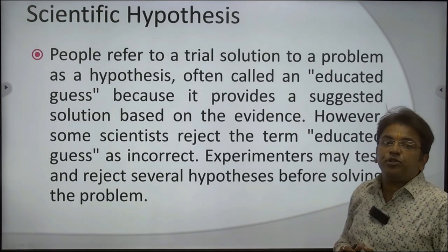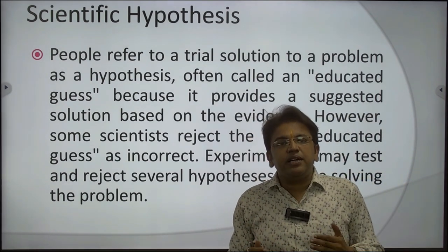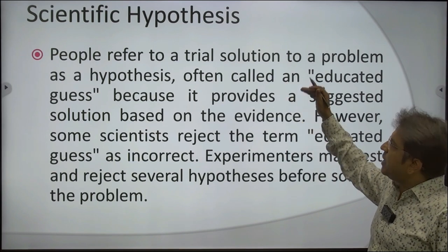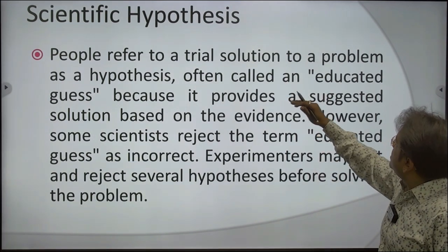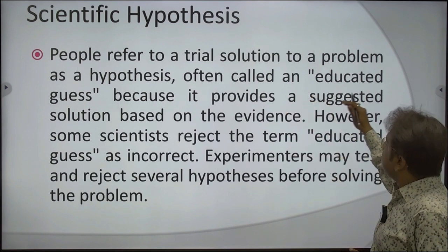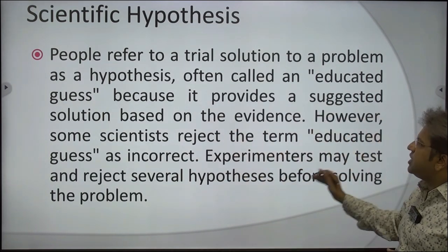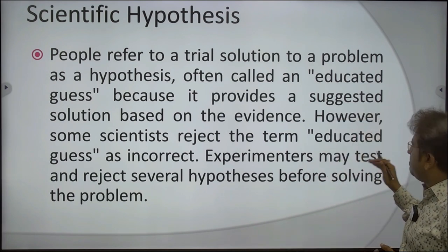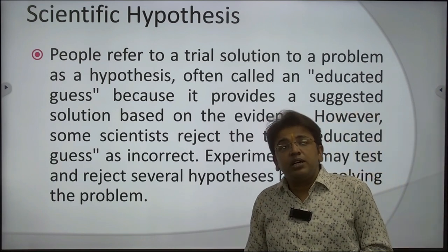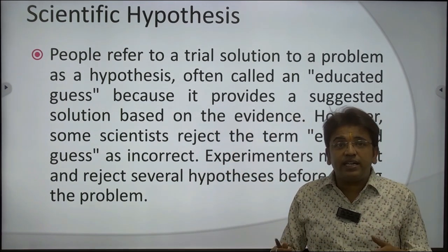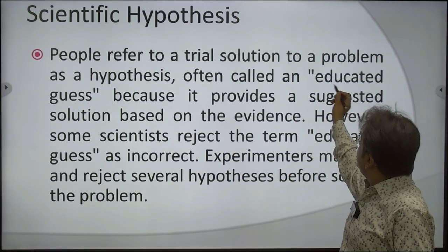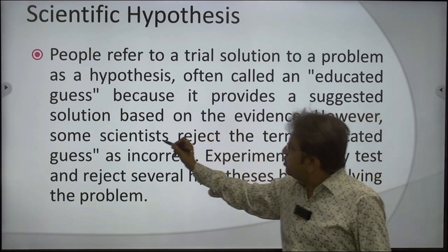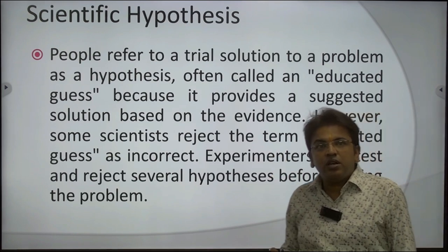Now, scientific hypothesis. Hypothesis is being made in all studies — whether science, behavior, or agriculture. A scientific hypothesis is a trial solution to a problem, and is often called an educated guess because it provides a suggested solution based on evidence. However, some scientists reject the term 'educated guess' as incorrect. Experiments may test and reject several hypotheses before solving the problem. The guess is based on some education and primary knowledge.